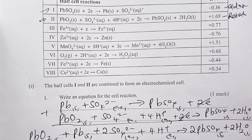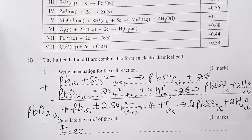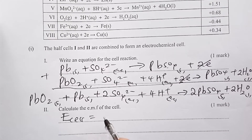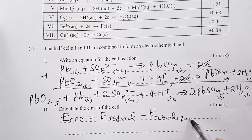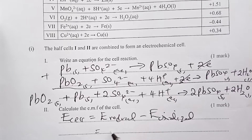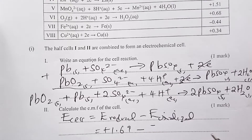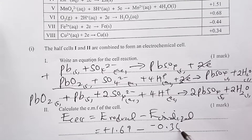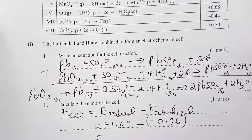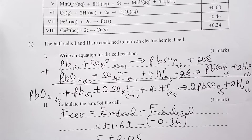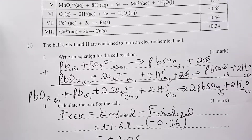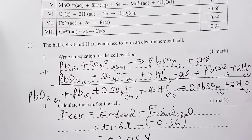Calculate the EMF of the cell. E cell is given by the equation: E reduced minus E oxidized. So E reduced is positive 1.69; from it we subtract E oxidized 0.36, and you get positive 2.05 volts. We can ignore the units since they are already specified in the table as volts, but if you added volts, no big deal. Half a mark for the formula, half a mark for the answer.